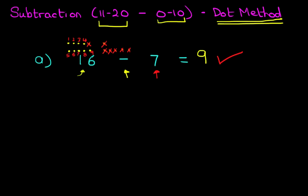Okay, let's move on to our second example. This time we've got 18 minus 4. So what is 18 minus 4? Now using the dot method, the first thing we have to do is to draw 18 dots above number 18.